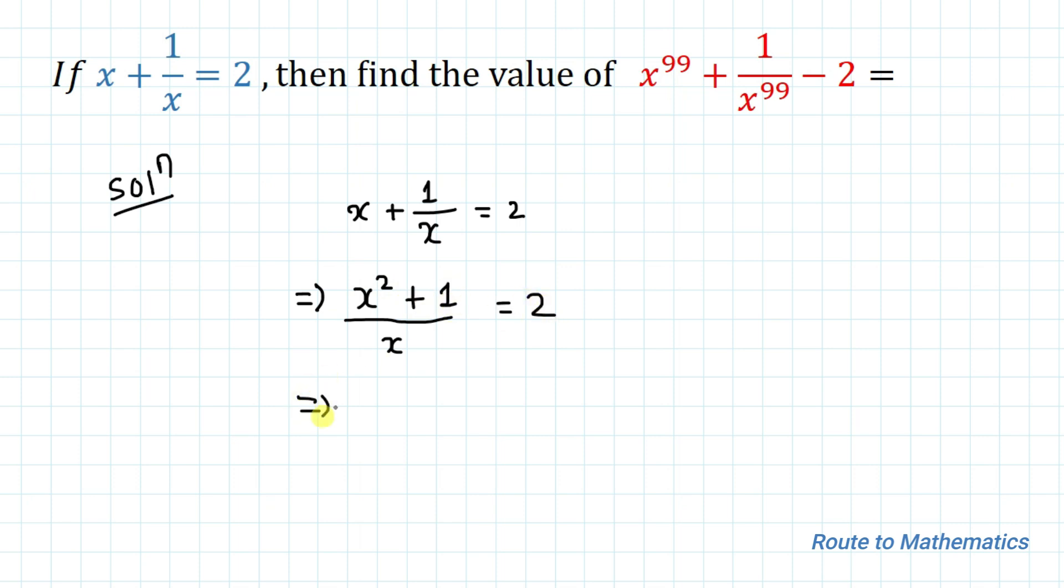Now taking 2x to the left hand side, we have x square minus 2x plus 1 equals 0. So we're getting a quadratic equation.